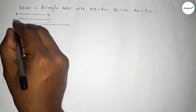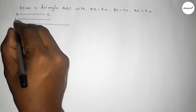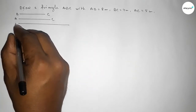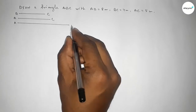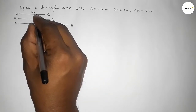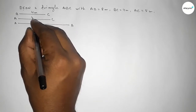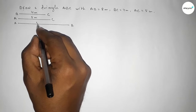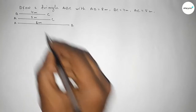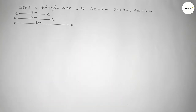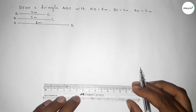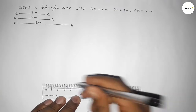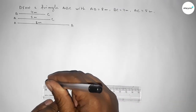So this first one is the BC line, this one is the AC line, and this last one is the AB line. So this is 4 centimeter, this is 5 centimeter, and this is 8 centimeter.